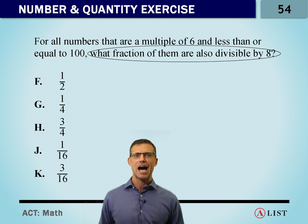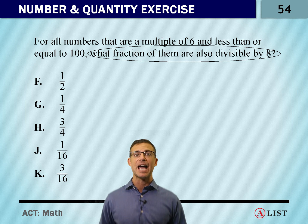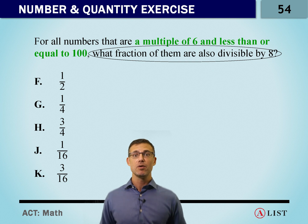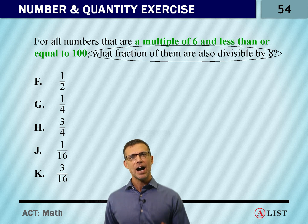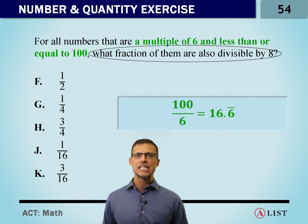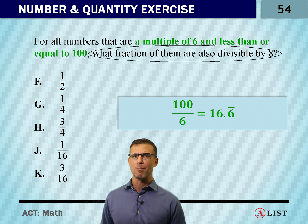So first, we're going to have to figure out how many different numbers are in play at all. So we've got 100 numbers. We're looking for them to be a multiple of 6. So if we divide 100 by 6, we get 16.6 repeating numbers.